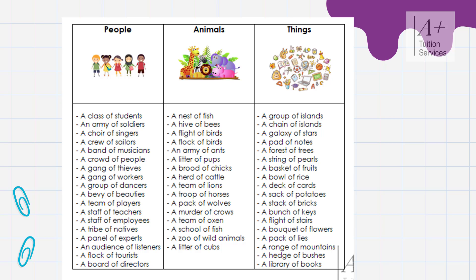A gang of workers. A group of dancers. A bevy of beauties. A team of players. A staff of teachers. A staff of employees. A tribe of natives. A panel of experts — for example, the panel of experts is working hard to determine the best solution for students and their education.